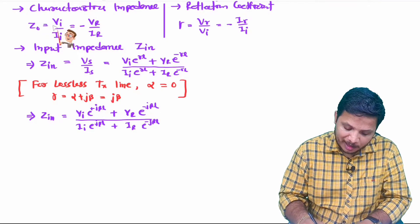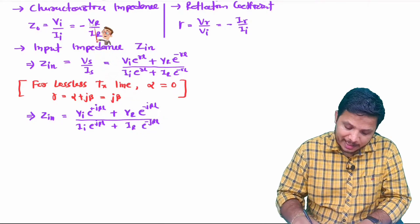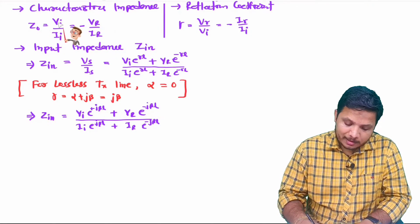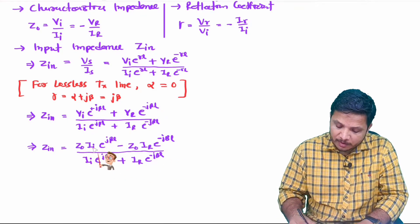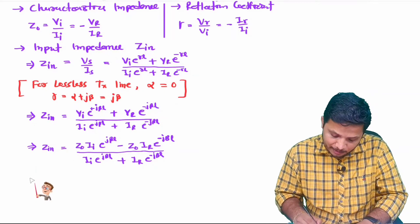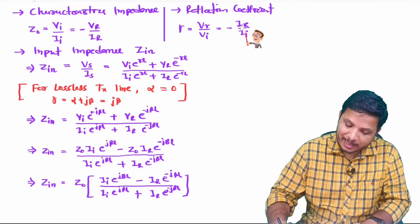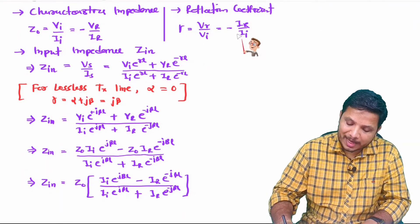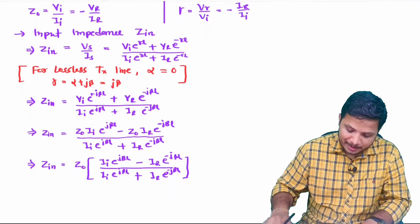We will use the formula for Z0: Vi can be written as Z0 times Ii, and Vr equals minus Z0 times Ir. Substituting Vi and Vr in terms of Z0, Ii, and Ir into the equation, Z0 is common in the numerator and can be taken outside. Then, since the reflection coefficient equals minus Ir over Ii, we can write Ir as minus of reflection coefficient times Ii, and the Ii terms cancel.